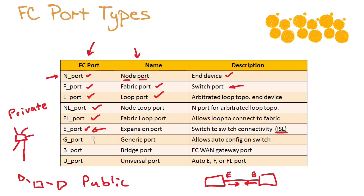The G port is a generic port — a port that can be configured for any particular port type. Ports can start out as generic G ports, and then based on what they're connected to, they can be automatically configured for their particular port type. A B port is a special type of expansion port used in fiber channel WAN gateways, where we extend fiber channel traffic over an IP infrastructure in a wide area network environment. B port stands for bridge port.